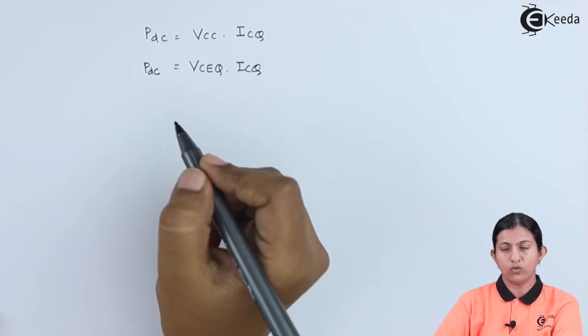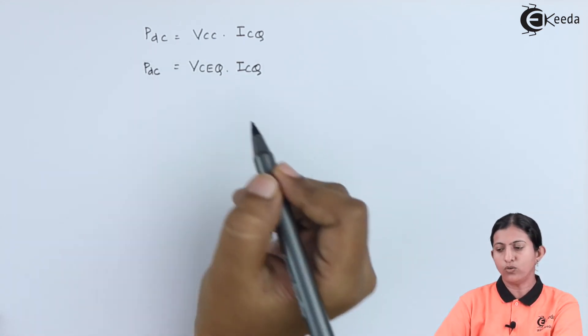VCC is equal to VCEQ. So PDC is equal to VCEQ into ICQ.